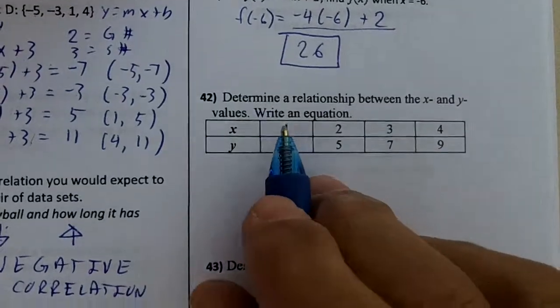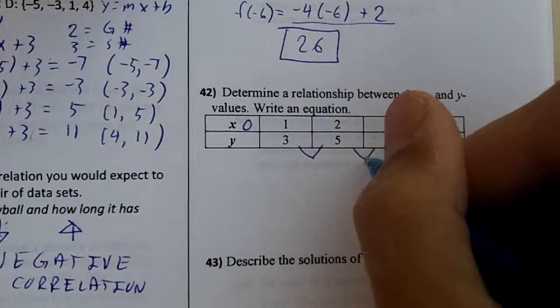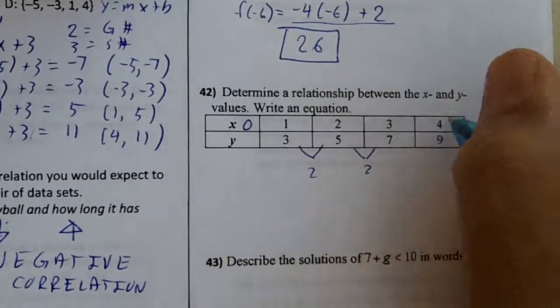On this problem, remember you need your zero number. These are growing by 2, and the x isn't skipping.